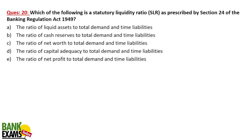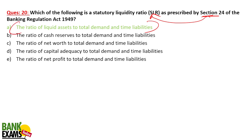What is the SLR — Statutory Liquidity Ratio? SLR is described in Section 24 of the Banking Regulation Act. It is the ratio of liquid assets to the total demand and time liabilities of a bank. RBI periodically changes the SLR and CRR, typically in MPC (Monetary Policy Committee) meetings each quarter.